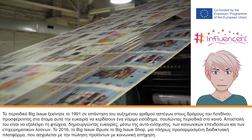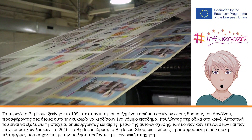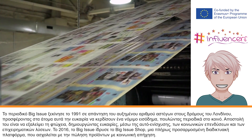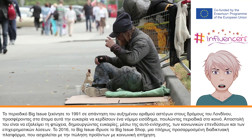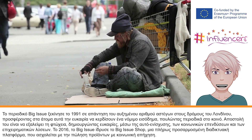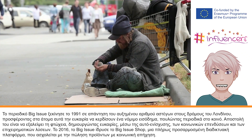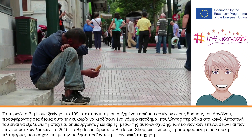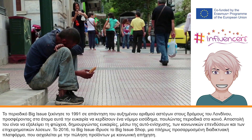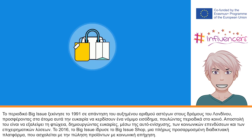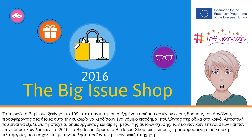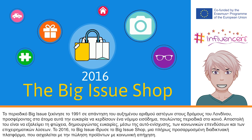The Big Issue magazine was launched in 1991 in response to the growing number of rough sleepers on the streets of London, by offering people the opportunity to earn a legitimate income through selling a magazine to the public. Their mission is to dismantle poverty by creating opportunity through self-help, social trading and business solutions. In 2016, The Big Issue launched The Big Issue Shop, a fully customised online platform committed to selling products with a social ethos.